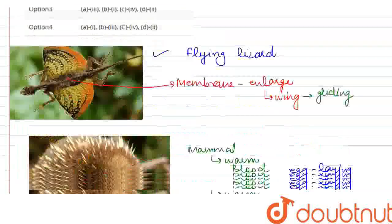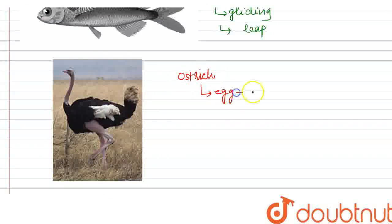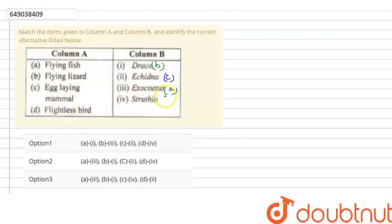Next, Struthio. Struthio is the scientific name of the ostrich. Ostriches lay the largest eggs, the largest cell. They have wings present but they do not fly, so they are flightless birds. The males have black colored feathers and females have light brown colored feathers. Ostriches are the largest birds. So Struthio matches with D.